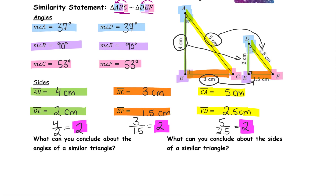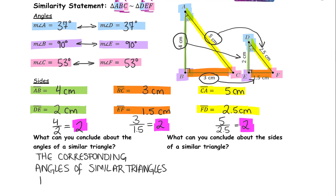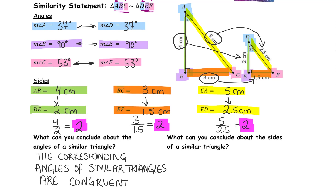What can you conclude about the angles of a similar triangle? The corresponding angles of similar triangles are equal — so we're going to write they are congruent. The corresponding angles of similar triangles are congruent; the angles are of equal measure. What can we conclude about the sides of similar triangles? Well, the sides are not equal — 4 is not equal to 2 — but the ratio of the sides is equal, which means that the corresponding side lengths are proportional.